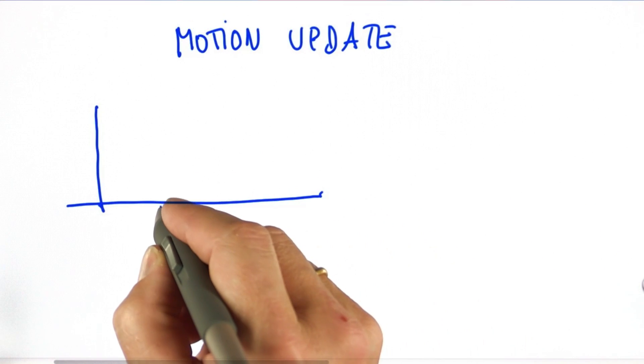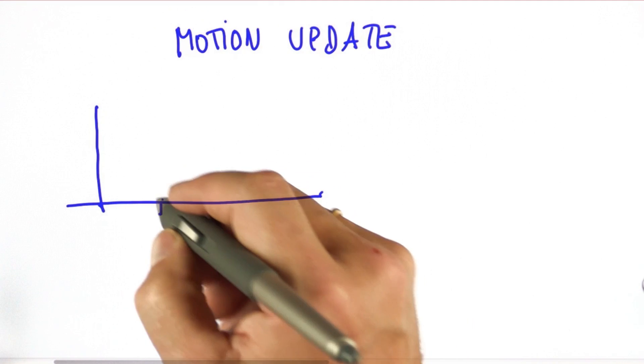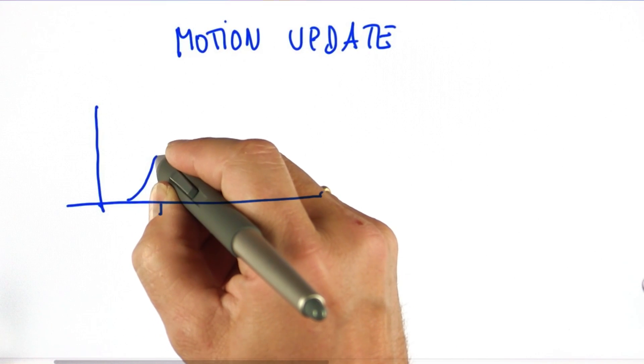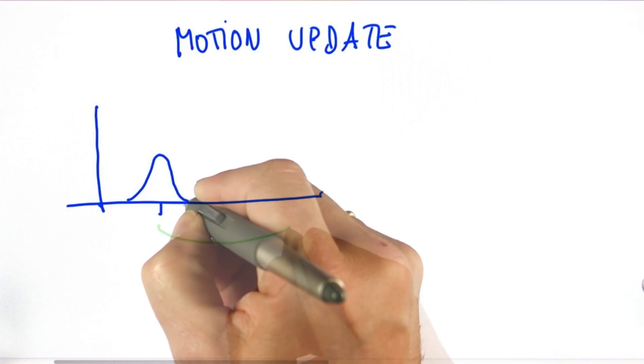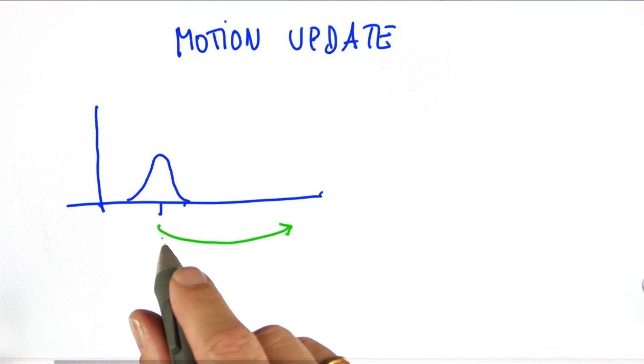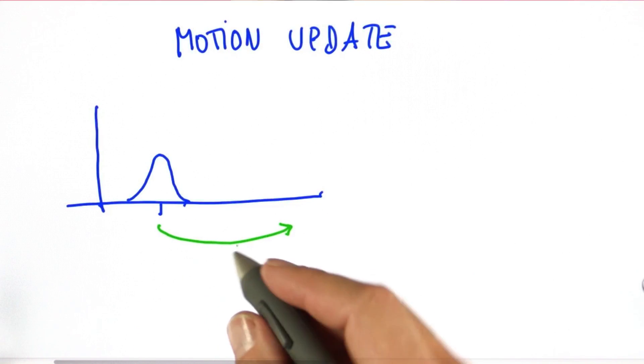Suppose you live in a world like this. This is your current best estimate where you are, and this is your uncertainty. And now say you move to the right side a certain distance, and that motion itself has its own set of uncertainty.